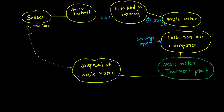We have started with wastewater engineering. In water supply engineering, water is taken from the source, treated at a water treatment plant, and distributed to the community. After distribution, a certain percentage of water comes out as wastewater. This wastewater is collected and conveyed to the wastewater treatment plant via the sewerage system, and after treatment it is disposed back into a source.